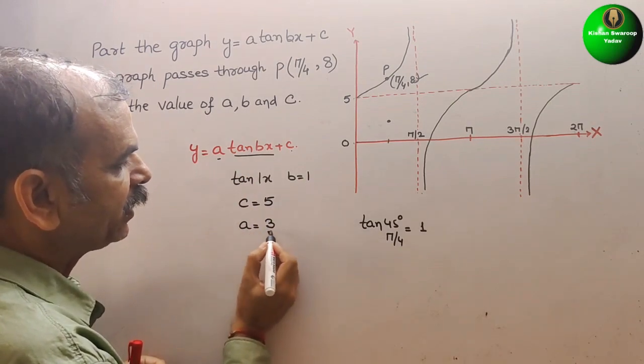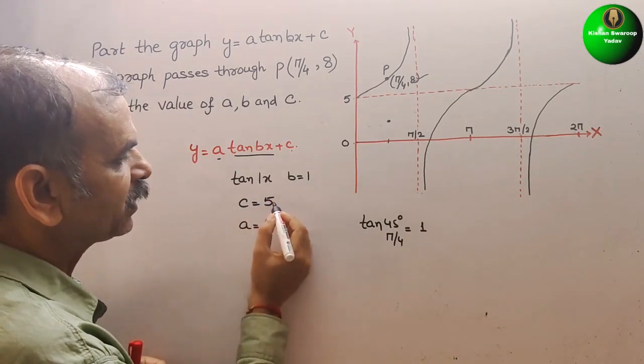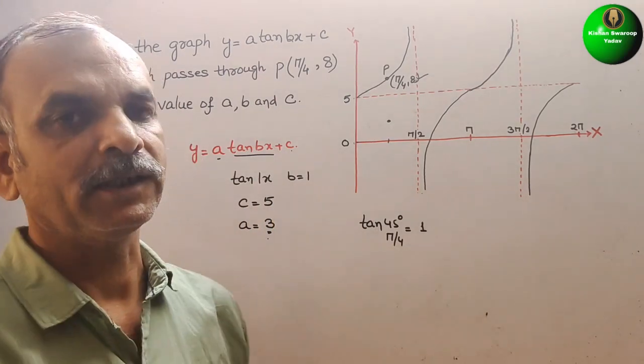So your answer is a is 3, b is 1, c is 5. So like this, we have to find it out.